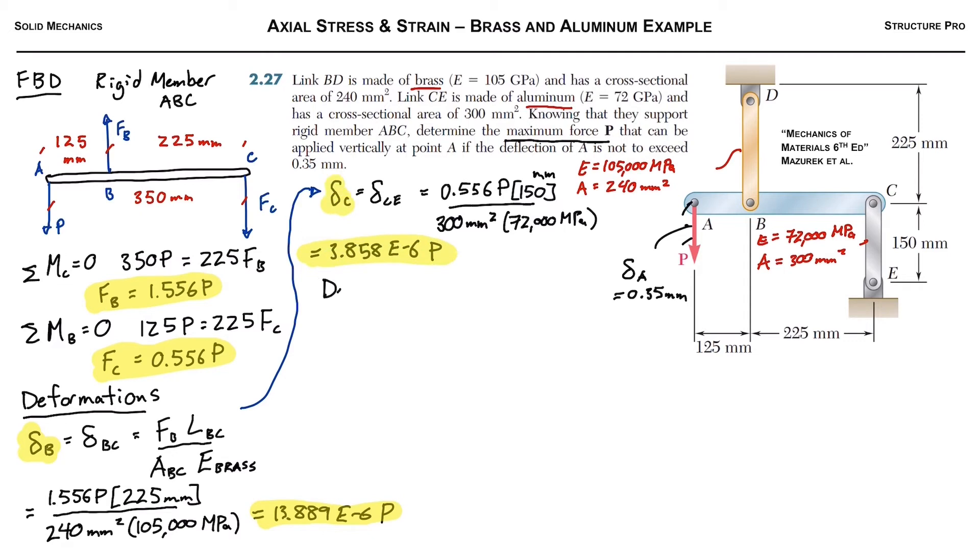Okay, so plugging all that in, it gives us 3.858 times 10 to the negative 6P. So that is the deflection at point C. So next step, getting near to the end here, the deflection diagram. So this is where we draw out the rigid link ABC, and we draw the different deflection points.